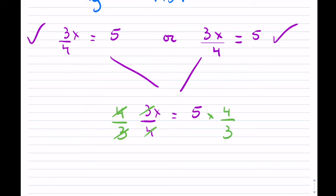For anyone who doesn't remember, the reciprocal is where you swap numerator and denominator. Now we can solve this: x equals 5 times 4 is 20, and it's over 1 times 3, which is 3. So x equals 20 over 3. If you wanted, you can change this back into a decimal, leave it as a fraction, or maybe leave it as a mixed number — that I'll leave up to you.